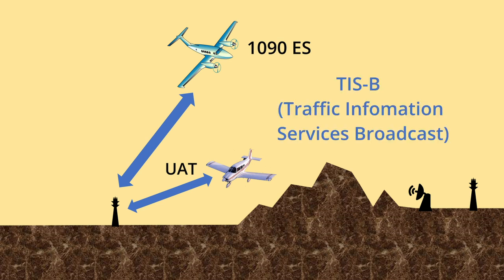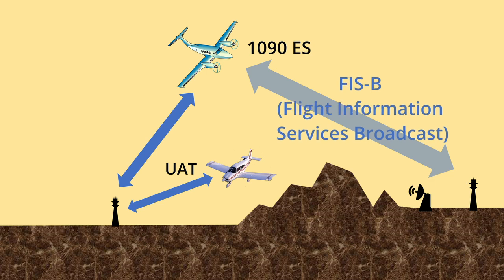Additionally, TIS-B, or Traffic Information Services Broadcast, blends the traditional radar system targets into the ADS-B system to be rebroadcasted for all users. FIS-B, or Flight Information Services Broadcast, is another enhancement that comes with the ADS-B system. FIS-B provides ADS-B-IN equipped aircraft with a suite of advisory aeronautical and weather information products to enhance the user's situational awareness.